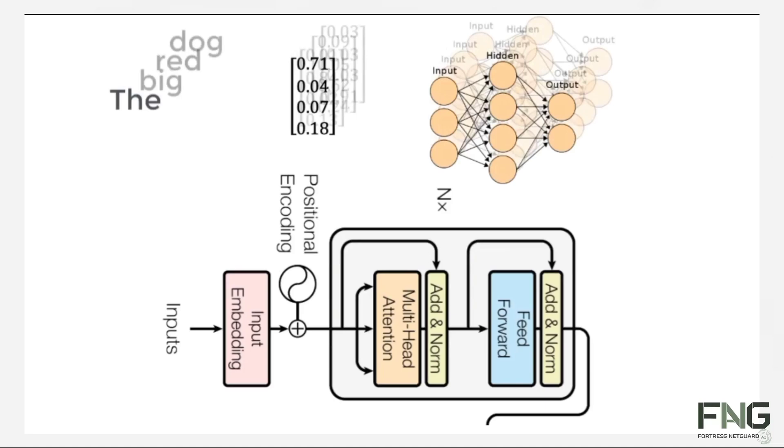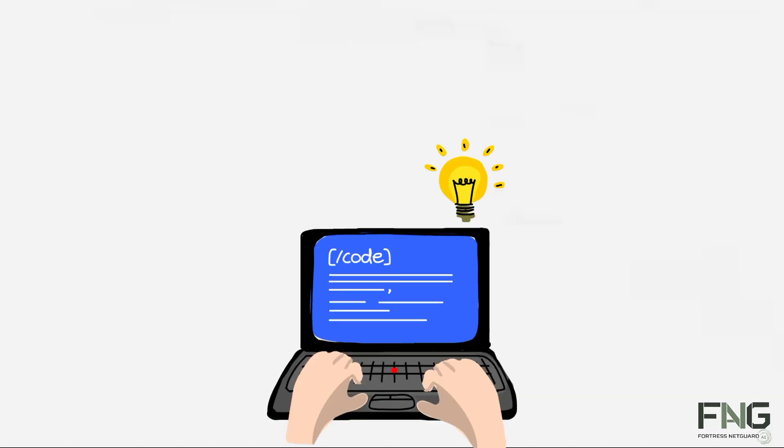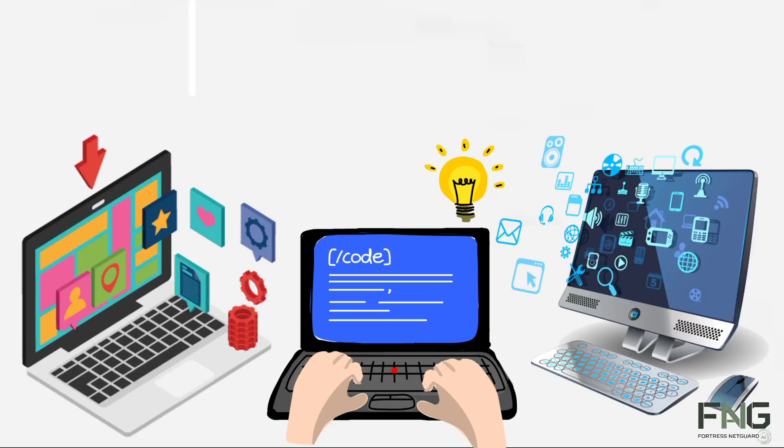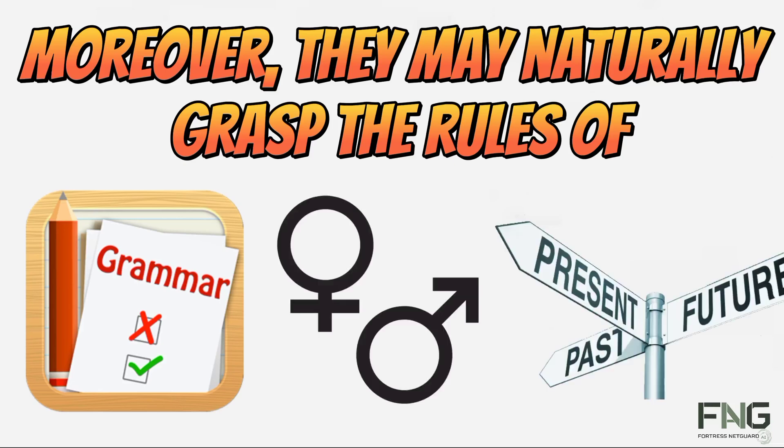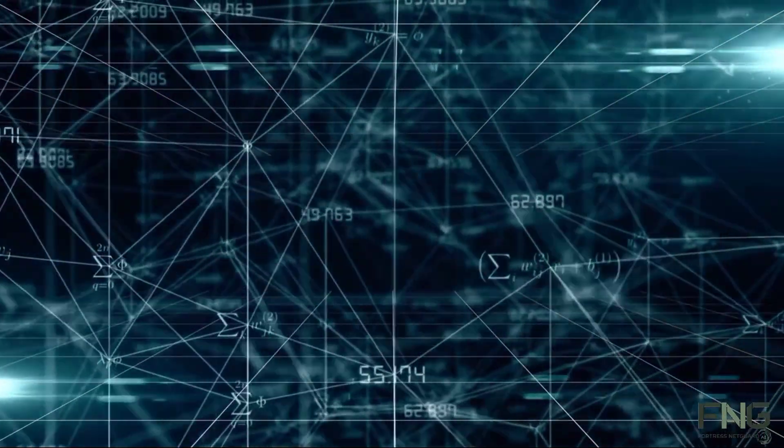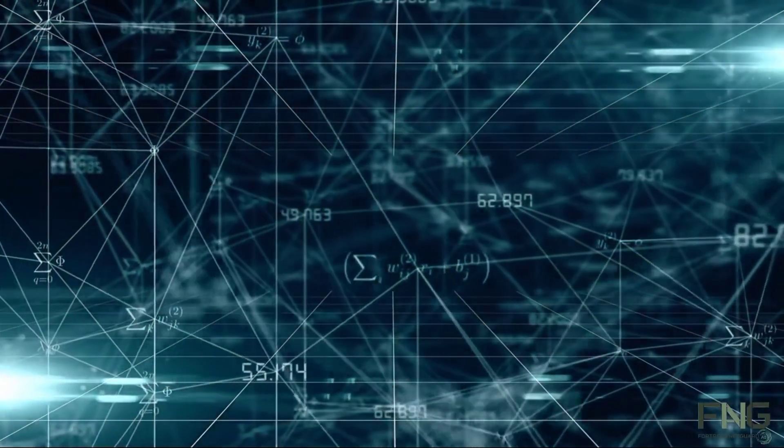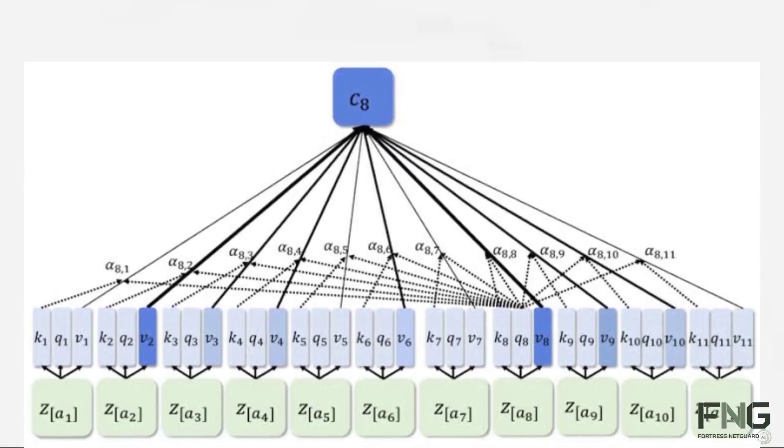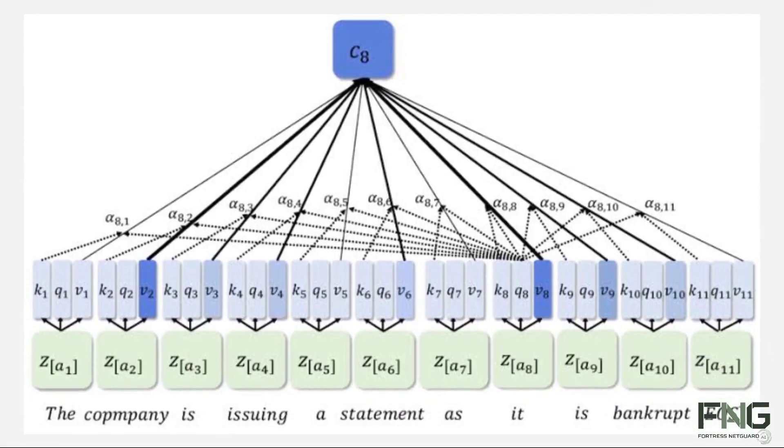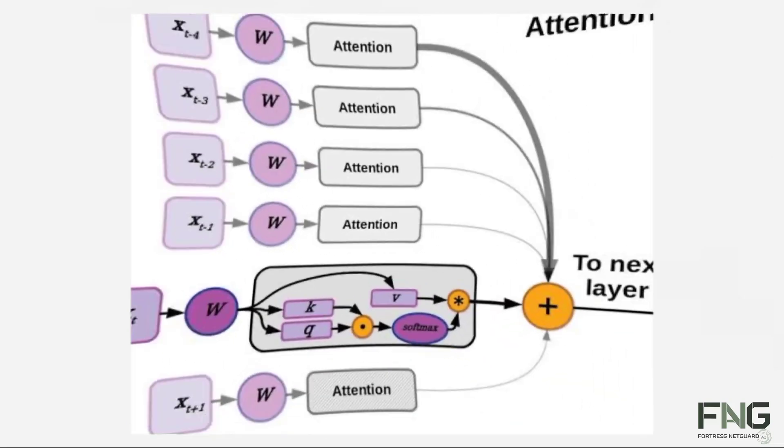They may learn, for instance, that programmer, software engineer, and software developer are synonymous. Moreover, they may naturally grasp the rules of grammar, gender, tense, and so forth. The neural network improves its internal representation of language, enhancing its performance across various language tasks. Attention, as it turns out, proves to be a highly effective method for enabling neural networks to comprehend language. When attention is directed towards the input text itself, its efficacy becomes apparent.